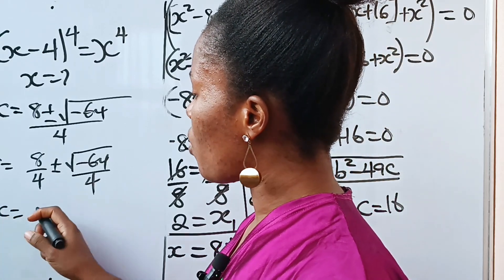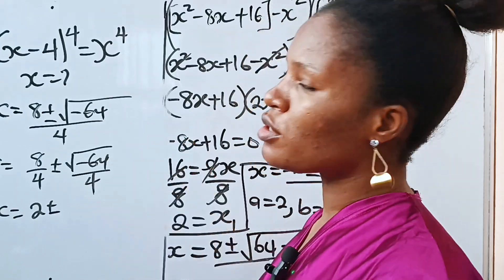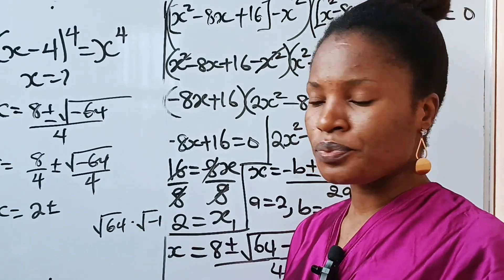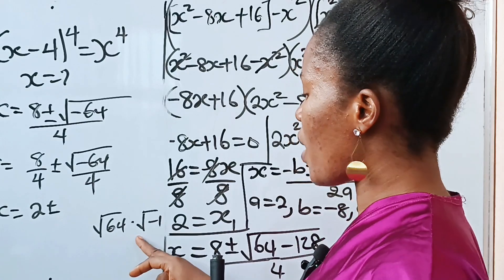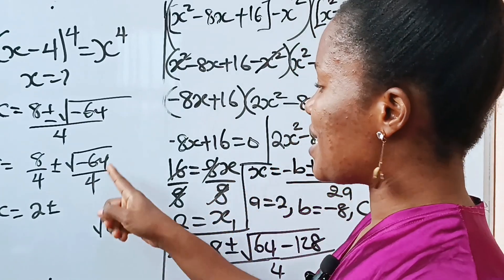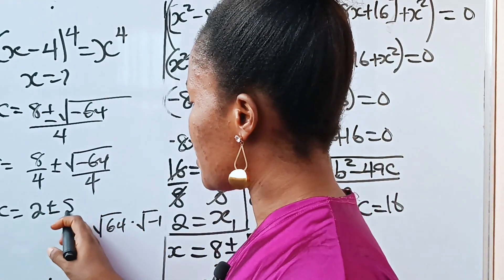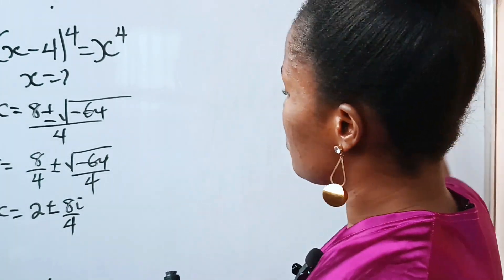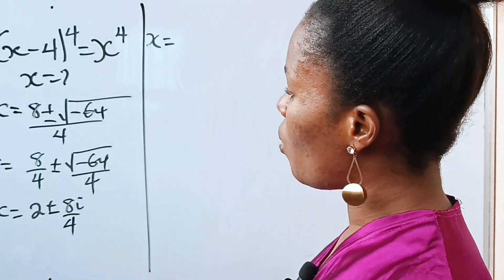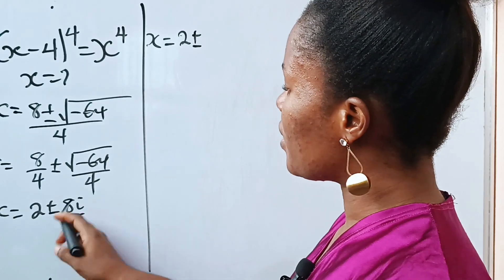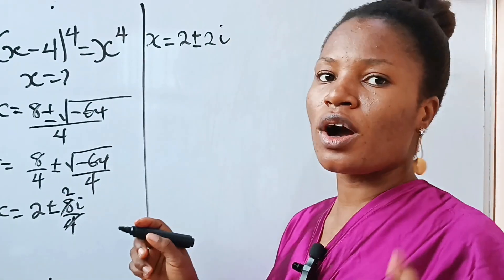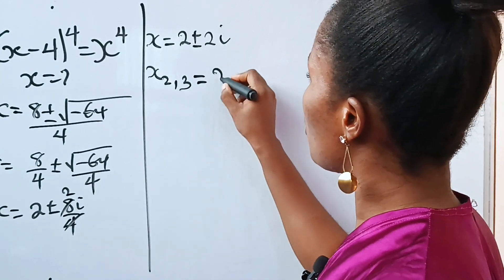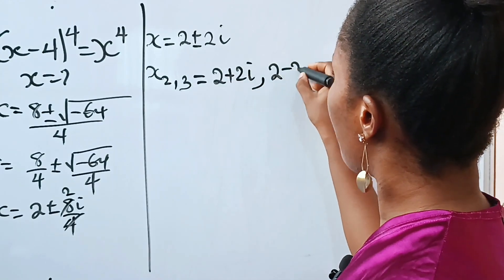The square root of minus 64 is the same as the square root of 64 multiplied by the square root of minus 1. The square root of 64 is 8, and the square root of minus 1 is i, so we get 8i. Dividing 8i by 4 gives 2i. Therefore x equals 2 plus or minus 2i, meaning x₂ equals 2 plus 2i and x₃ equals 2 minus 2i.